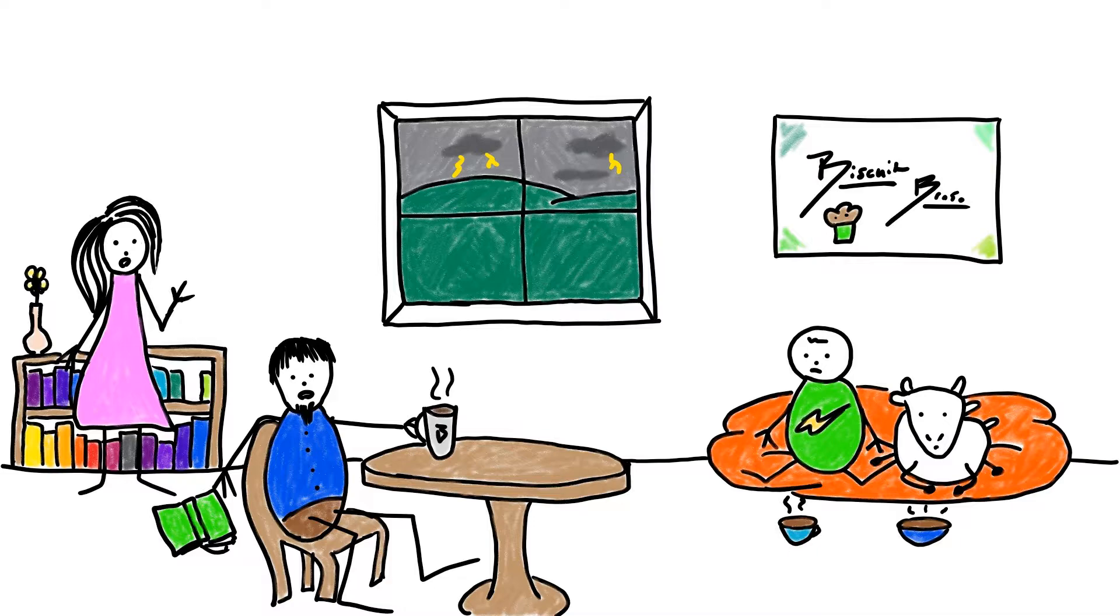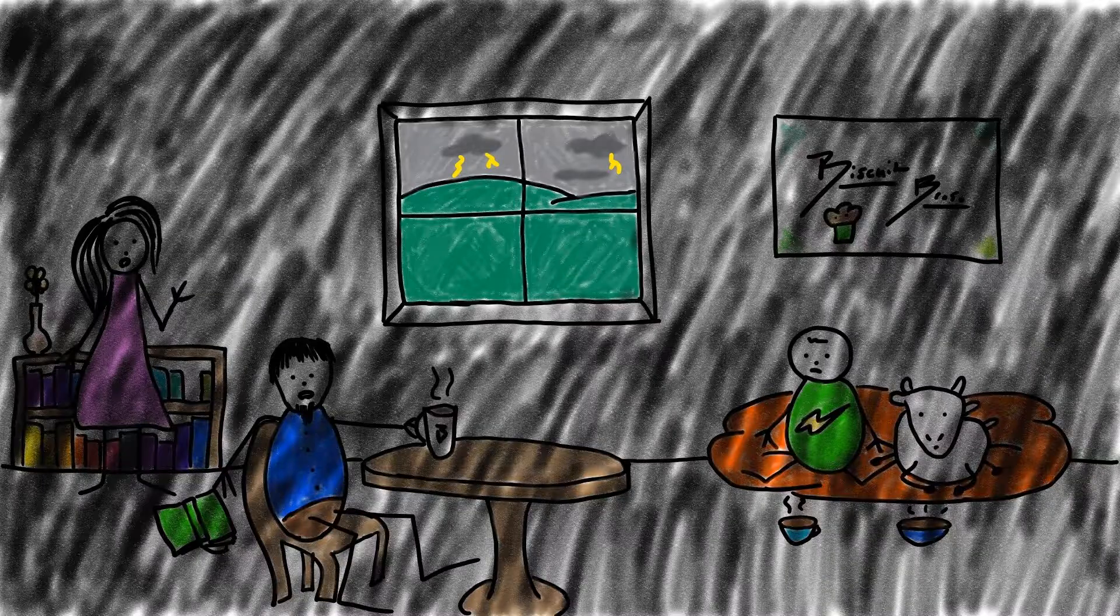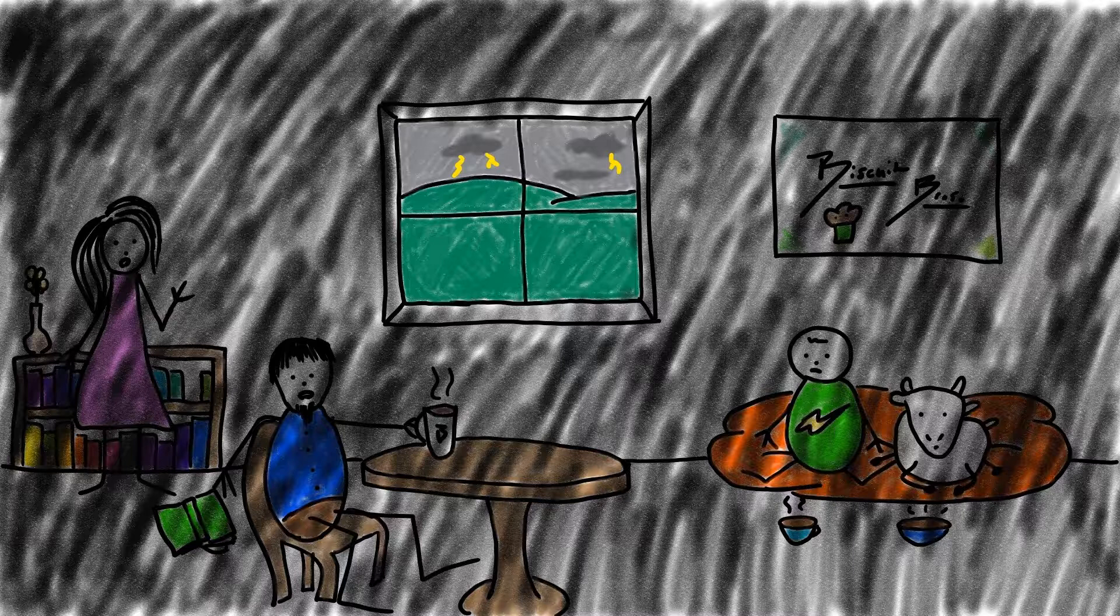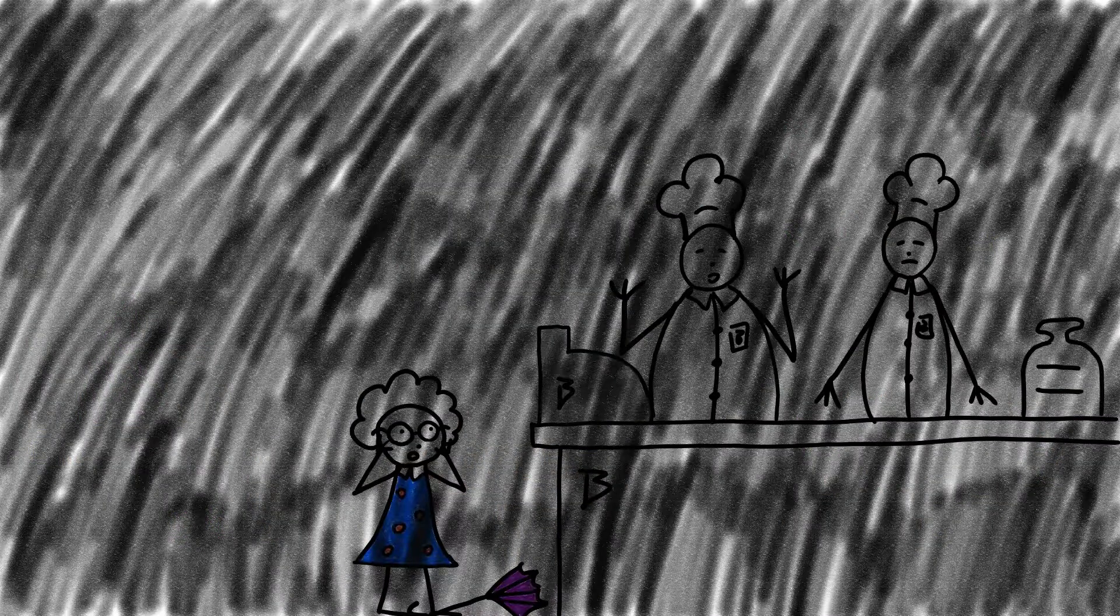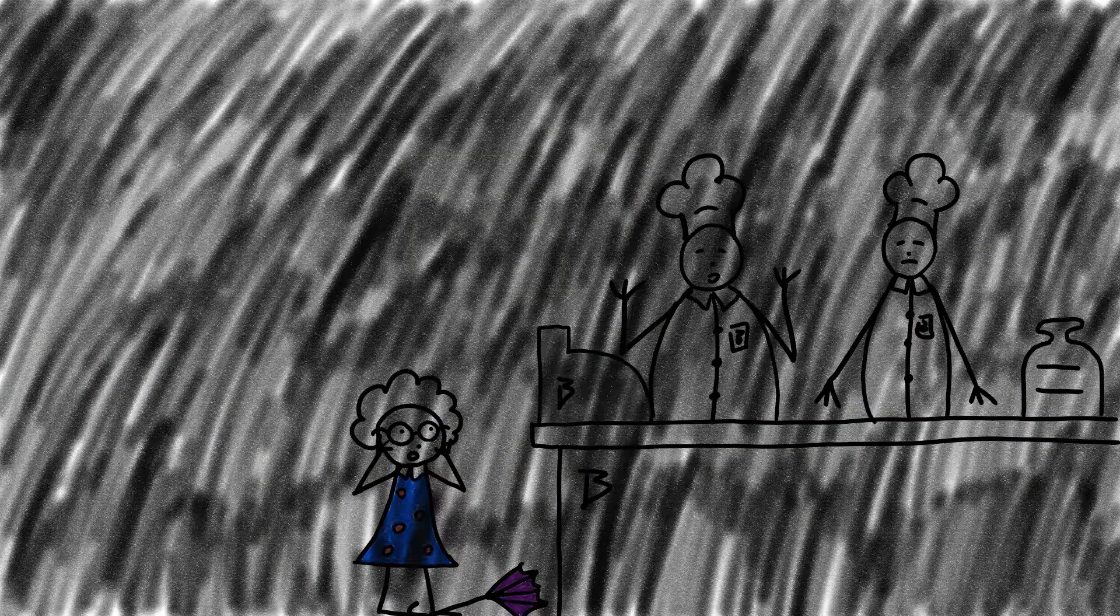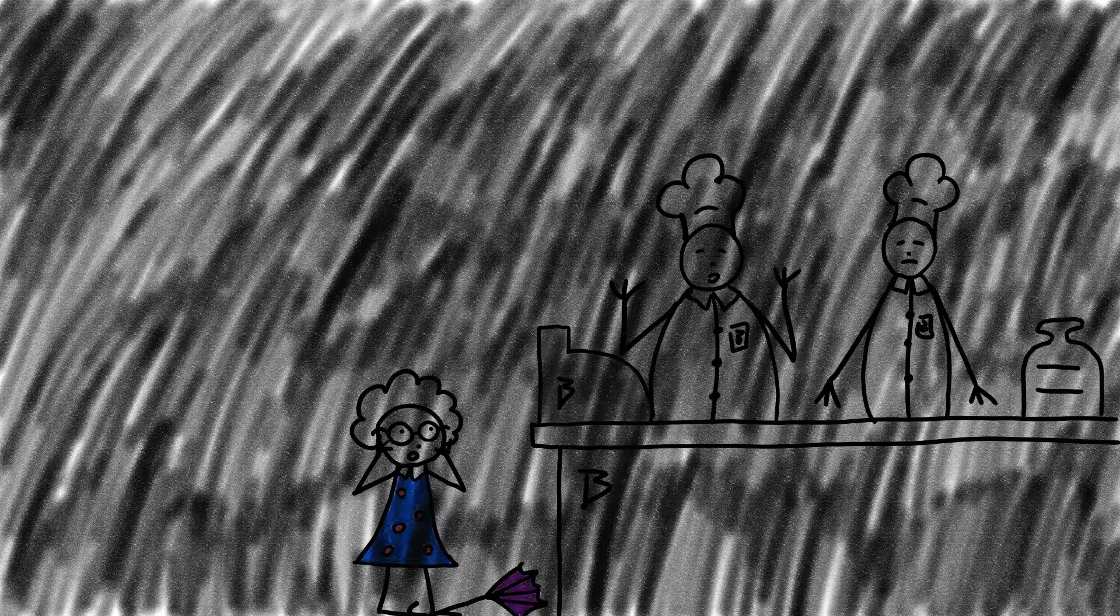Just then, everything went dark in the bakery. The thunderstorm has knocked the power out! Everyone looked around at everyone else. All anyone could see was everyone's eyes. Well, this is just splitted. Now how are we supposed to make biscuits? I can't even see my own hands!